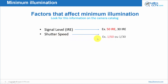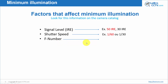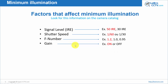Shutter speed is something very important. Using 1/60 is much better than 1/30 for minimum illumination — and as you may know from shutter speed discussions, 1/60 is better at freezing images. The F-number also matters: 1.2, 1.0, 0.95, for example. A lens with a lower F-number like 1.0 has a bigger aperture. Finally, the gain control — whether gain is on or off — also makes a difference in the measurement.